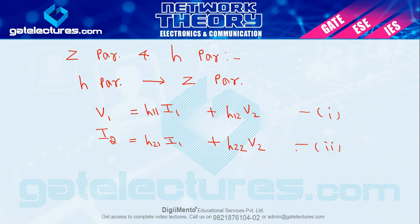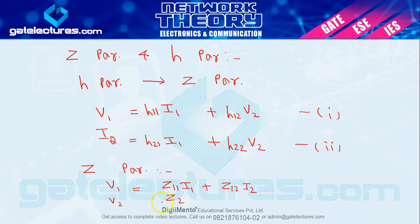We need to convert these into Z parameters. The Z parameter equations are: V1 = Z11·I1 + Z12·I2 (equation number 3), and V2 = Z21·I1 + Z22·I2 (equation number 4). Now we have two H parameter equations and two Z parameter equations.